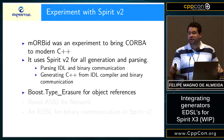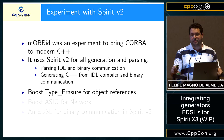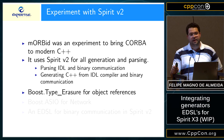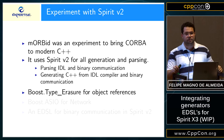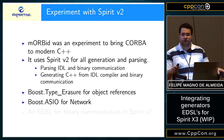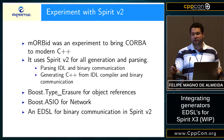We also used Boost.TypeErasure for object references. The generation was actually a generation of a concept of an object that was remote, and we used type erasure to erase the static type information — whether it was a local object or a remote object. So we use Boost.TypeErasure for network references, and the DSL for binary communication is Spirit V2.